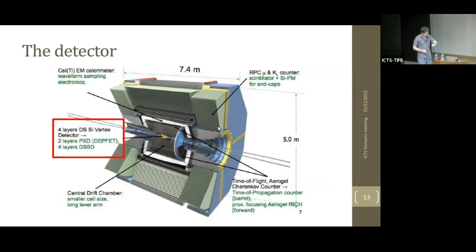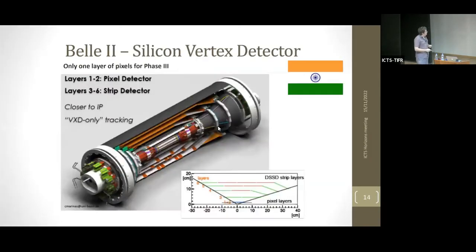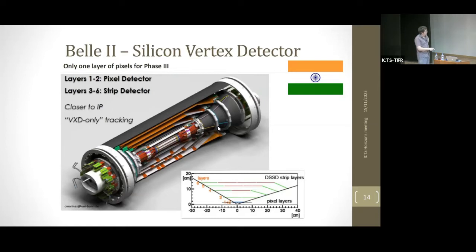I've highlighted the silicon vertex detector because it had a large Indian contribution. Under the leadership of TIFR we built the fourth layer — the second of four double-sided silicon detector layers. There's an interesting chip-on-sensor design called 'origami' to keep the readout close to the sensors and keep the mass low. Various institutes contributed alongside TIFR's leadership, and we've successfully contributed to making this detector work.